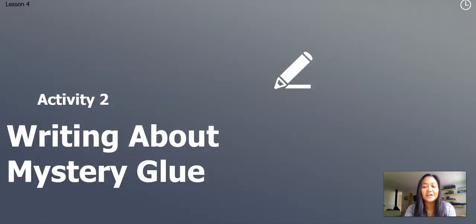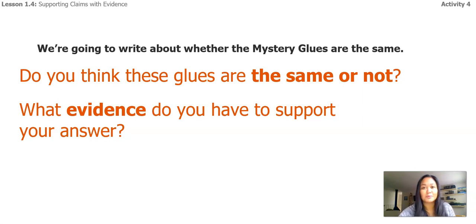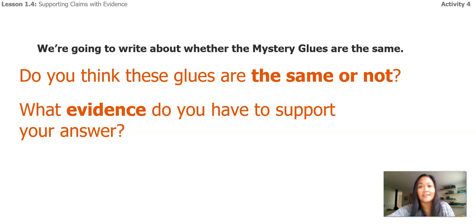In this next part of our lesson, we will write about mystery glue. Think back to mystery glue A and mystery glue B — we're going to write about them. Do you think these glues are the same or not? What evidence do you have to support your answer? I'm going to show you again to remind you. This is mystery glue A and this was mystery glue B.